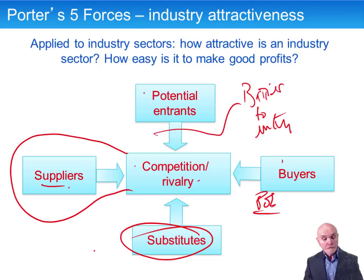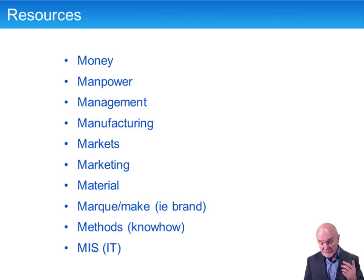Looking inside the organisation, we have resources and competences. What are we good at? What do we have a lot of? What are we short of? What are we bad at? Many people remember this by a list of M words.